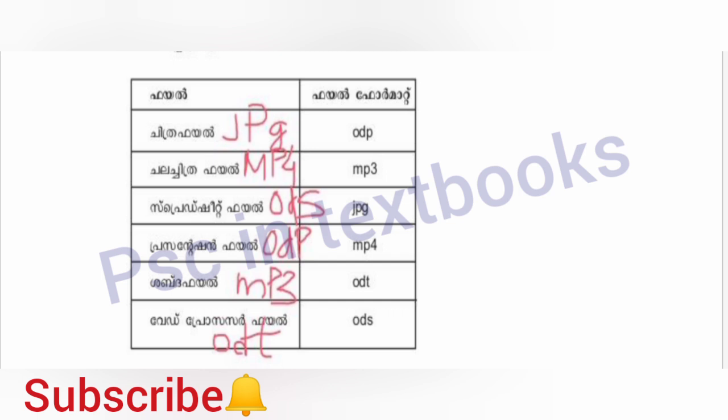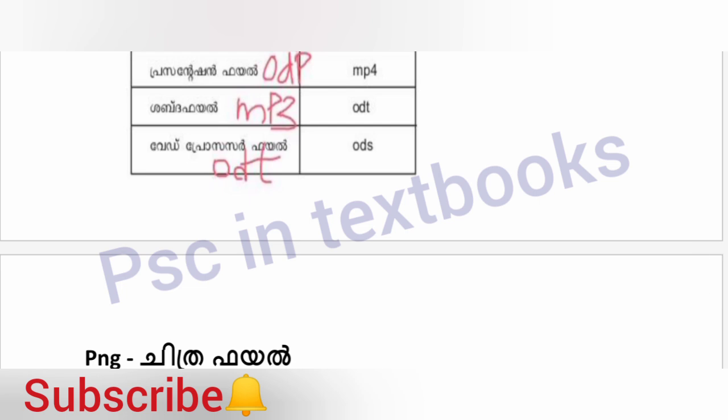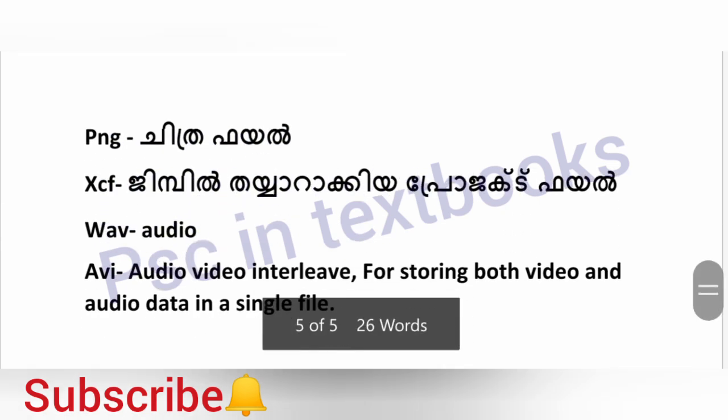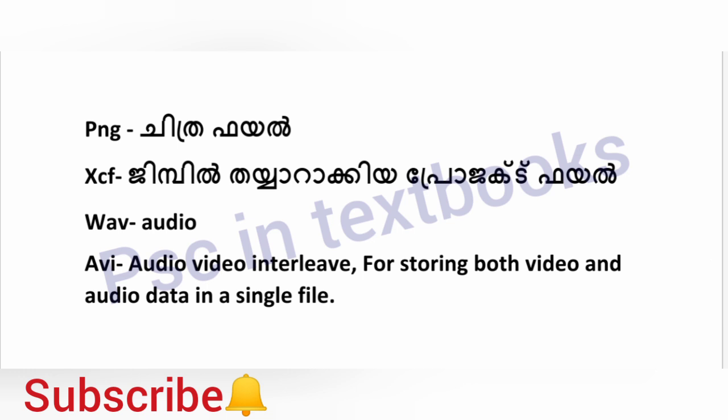Various file formats are discussed: the file extension .mb4, spreadsheet file .ods, presentation file .odp, word processor file .odt, and image files .png and .xcf. The GIMP native project format is .xcf.